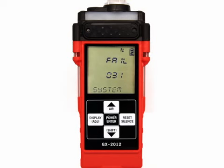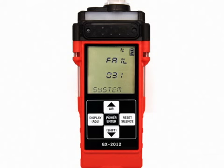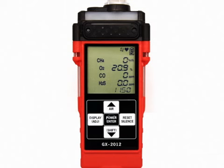If a system failure occurs, the system failure screen will display an error code. Explanations for the various error codes are shown in a table. If the error code is anything but 031, the instrument cannot be used — contact RKI Instruments as soon as possible. If the error code is 031, you may press and release the reset silence button to continue to normal operation temporarily; however, there will be no data logging function. If your unit experiences a microprocessor failure, the heart symbol at the top of the screen will be steadily on or steadily off, and the unit cannot be used. Contact RKI Instruments as soon as possible.